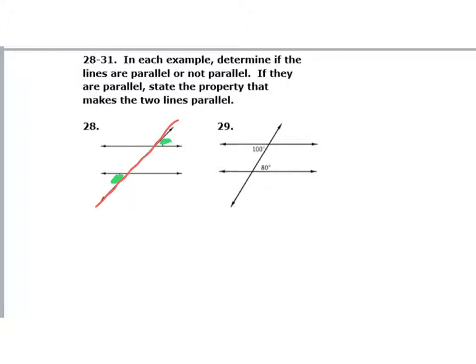The transversal has angles on alternate sides, and they're outside my two parallel lines. Those angles are alternate exterior and they are congruent. Alternate exterior angles do prove parallel lines. So yes, they are parallel, and the reason is that alternate exterior angles are congruent.